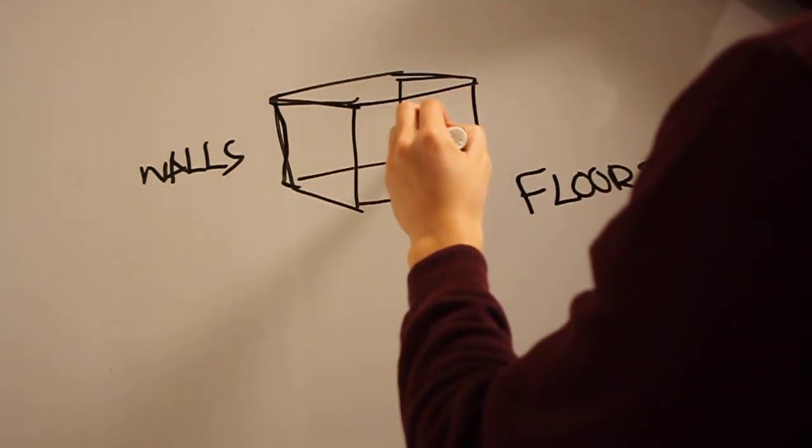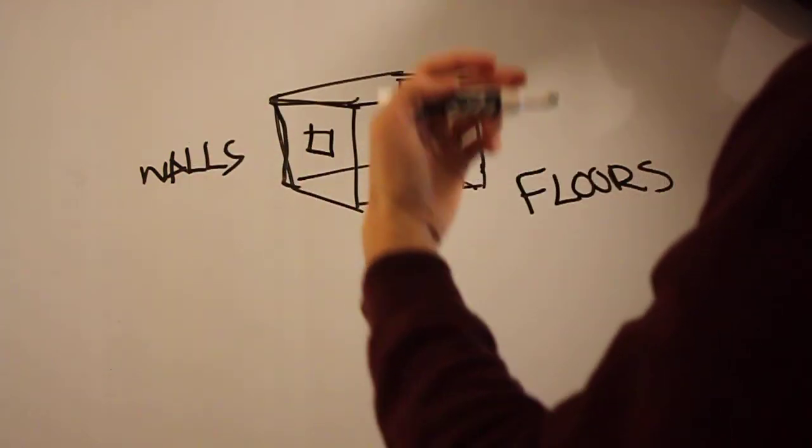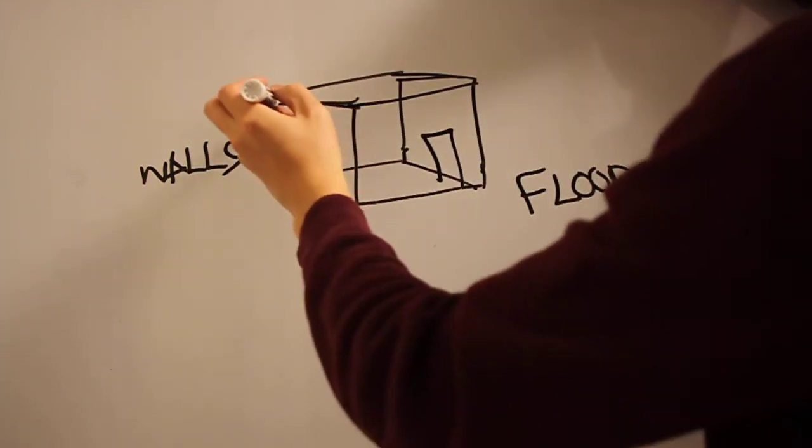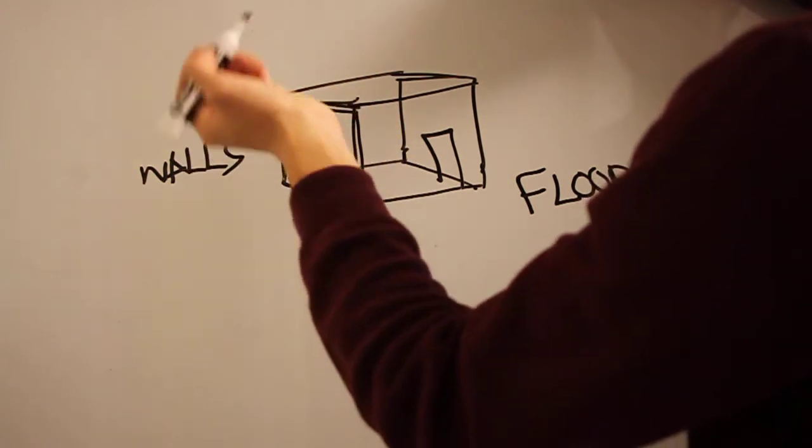Now we can poke openings in those planes, but you don't lose the integrity of the plane. You still have a very strong sense of this is a wall with a hole in it, or a window, or a door.